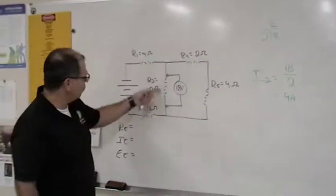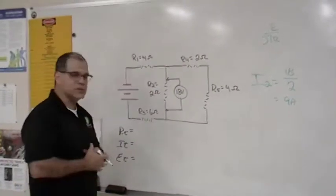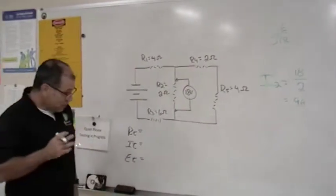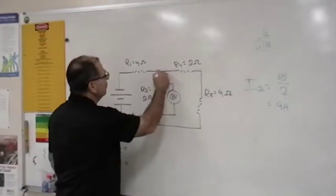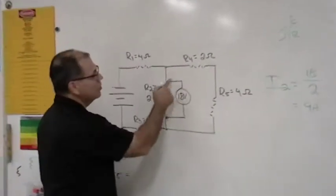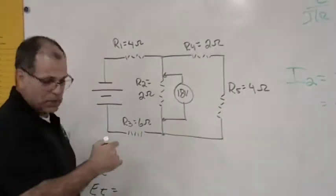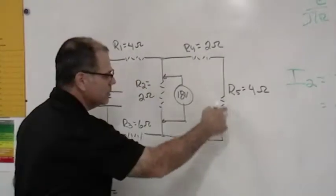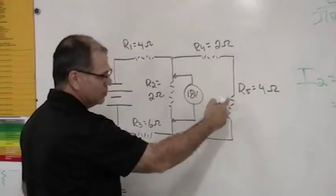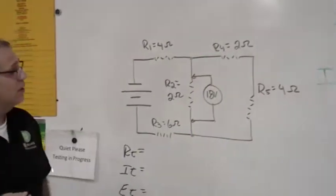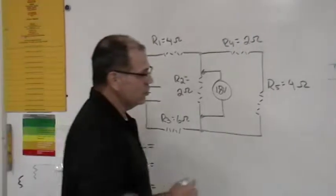So we have 9 amps that flow through resistor number 2. The other thing we know is that resistor 2 is parallel to 4 and 5. So I can solve for the current through 4 and 5 by combining these two resistors and using the same Ohm's law.